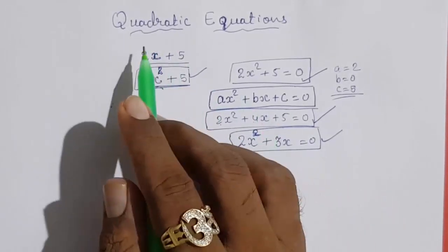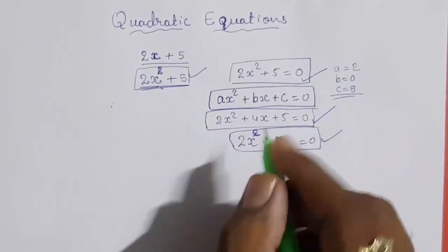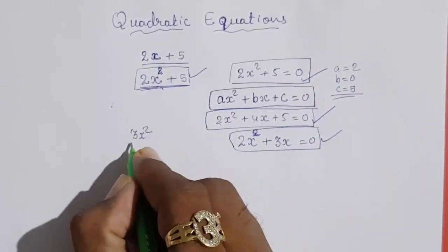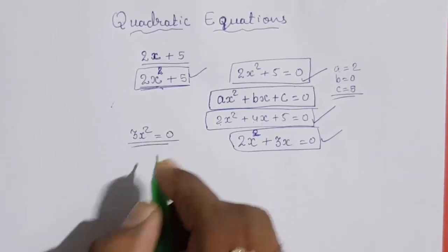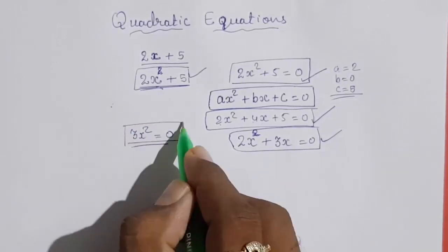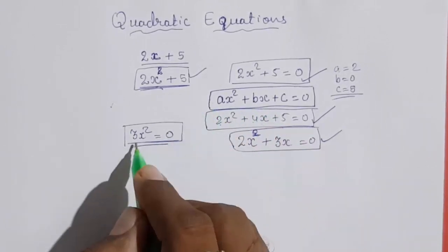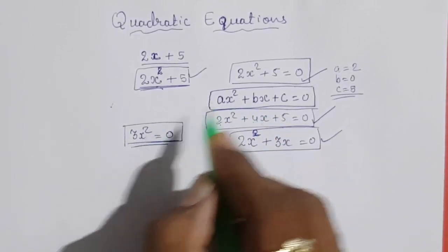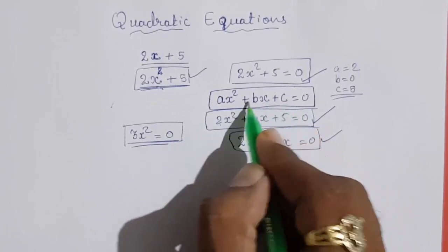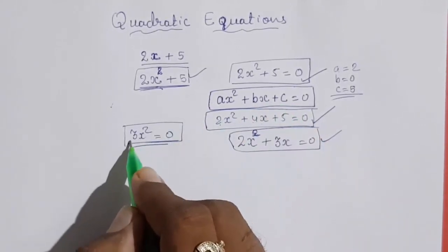At that time it forms a quadratic equation. It can be a single number also. 3x² equals 0. So this is also your quadratic equation. This is the standard form, but this is also a quadratic equation. Here your b and c will equal 0, and your a will be 3.